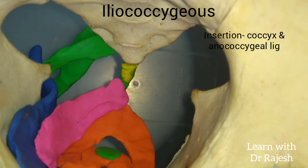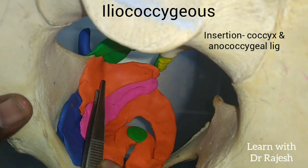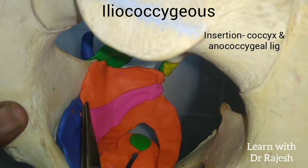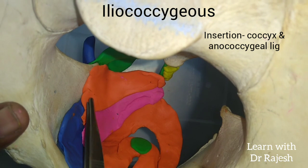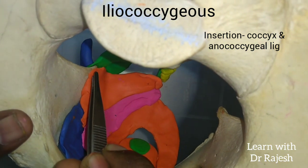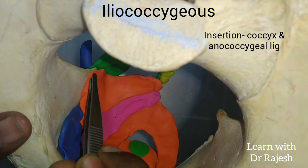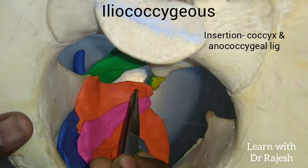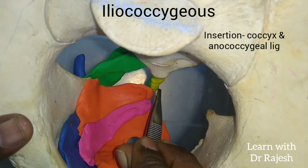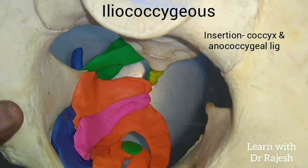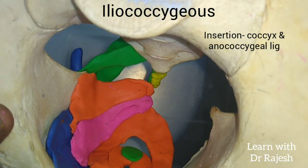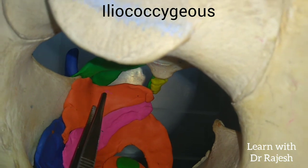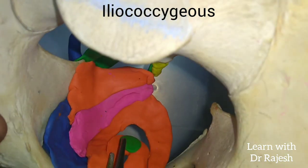In the model, the orange part represents the iliococcygeus, taking origin from the posterior part of the white line and also from the ischium and ischial spine on the pelvic surface. It gets inserted into the last two pieces of the coccyx and also the anococcygeal ligament. That completes the iliococcygeus part of the levator ani.